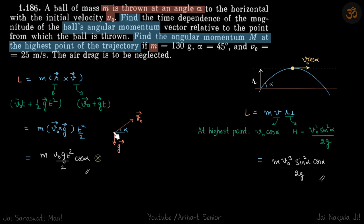Now v naught is initially at an angle alpha with the horizontal and g is down. So v naught cross g is v naught into g into sine of 90 plus alpha which is cos alpha.